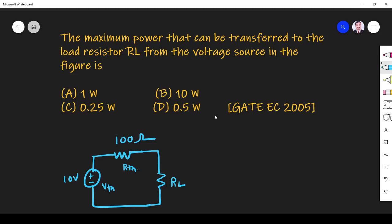Hi friends, in this video we solve a network theory related question asked in GATE 2005 ECE paper. The question is: the maximum power that can be transferred to the load resistor RL from the voltage source.